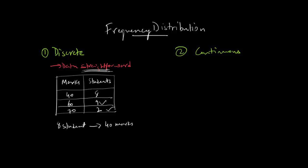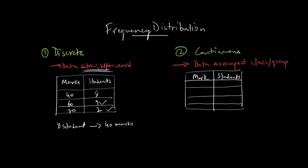On the other hand, in continuous frequency distribution, data is arranged in a class or group. What do I mean by that? Let me show you with an example. Suppose you have a dataset: again, marks in one column and number of students in another column.